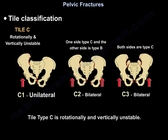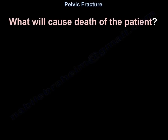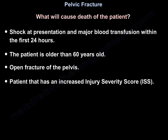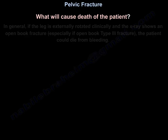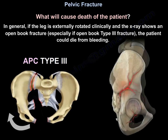Type C is rotationally and vertically unstable. Factors that will cause death of the patient include: shock at presentation and massive blood transfusion within the first 24 hours, patient older than 60 years old, open fracture of the pelvis, or increased ISS score. In general, if the leg is externally rotated clinically and the X-ray shows an open book - especially type 3 - the patient could die from bleeding.